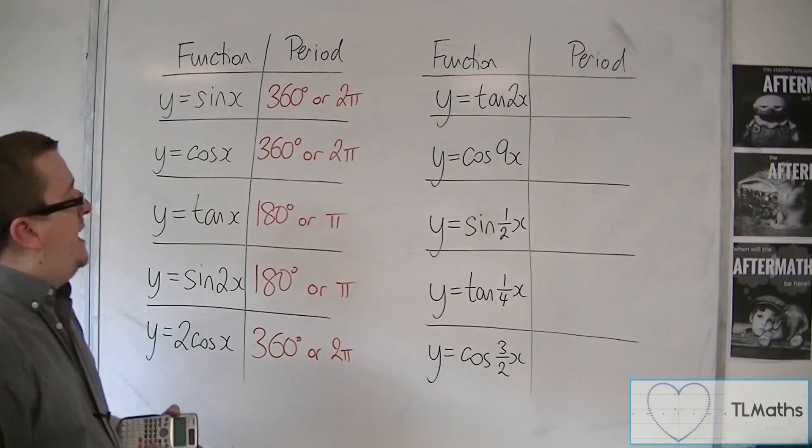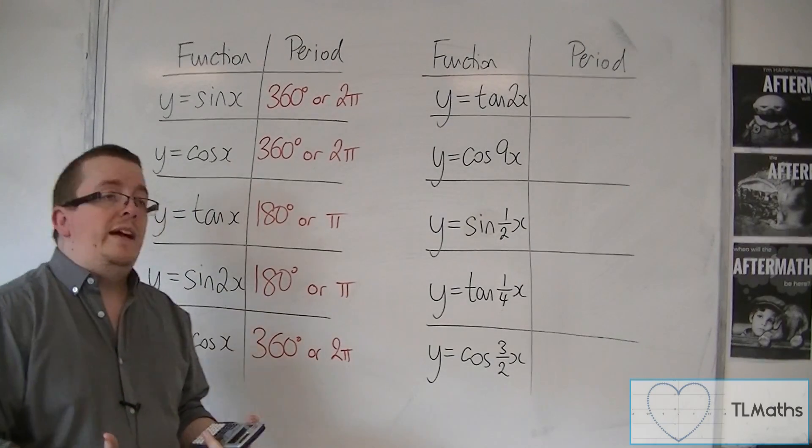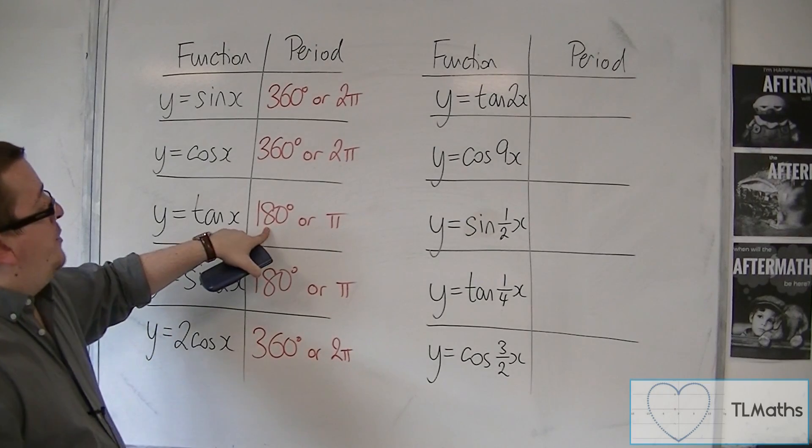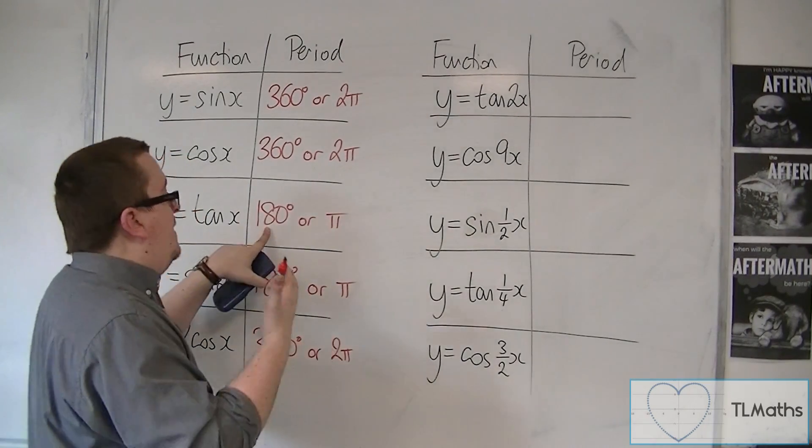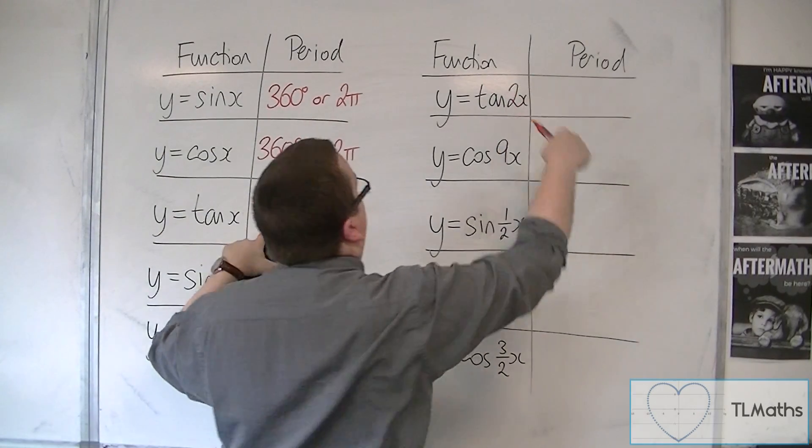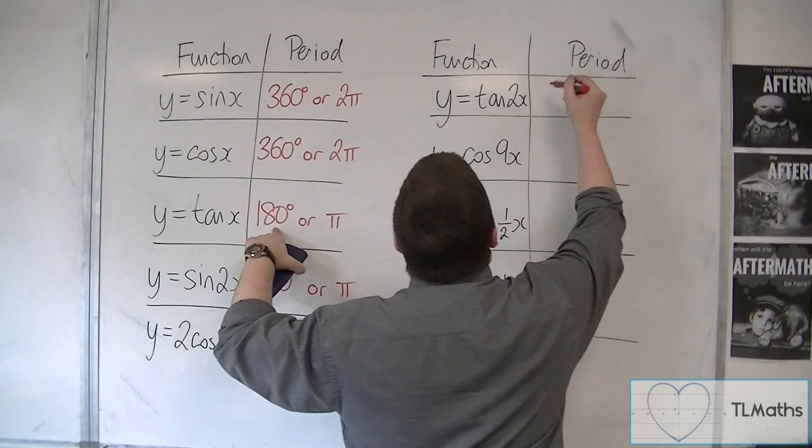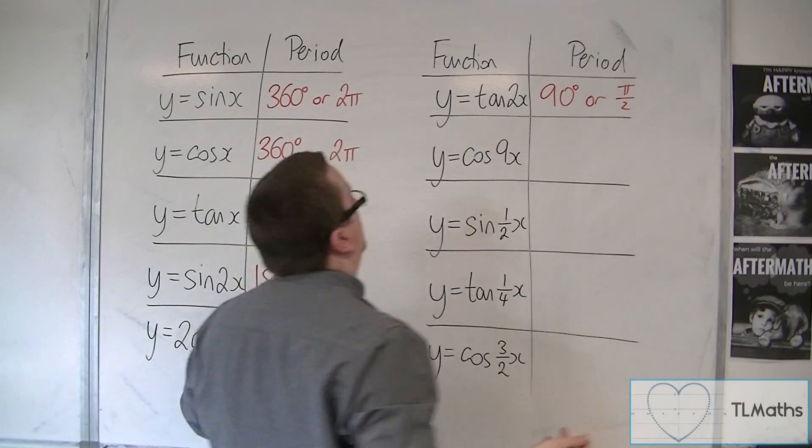Now for y is equal to tan 2x, that is a stretch parallel to the x-axis factor 1 half. And so the regular period is halved. So what you're effectively doing is you're taking this number and dividing it by that number that's in front of the x. So 180 divided by 2, so we're now in 90 degrees or pi over 2.